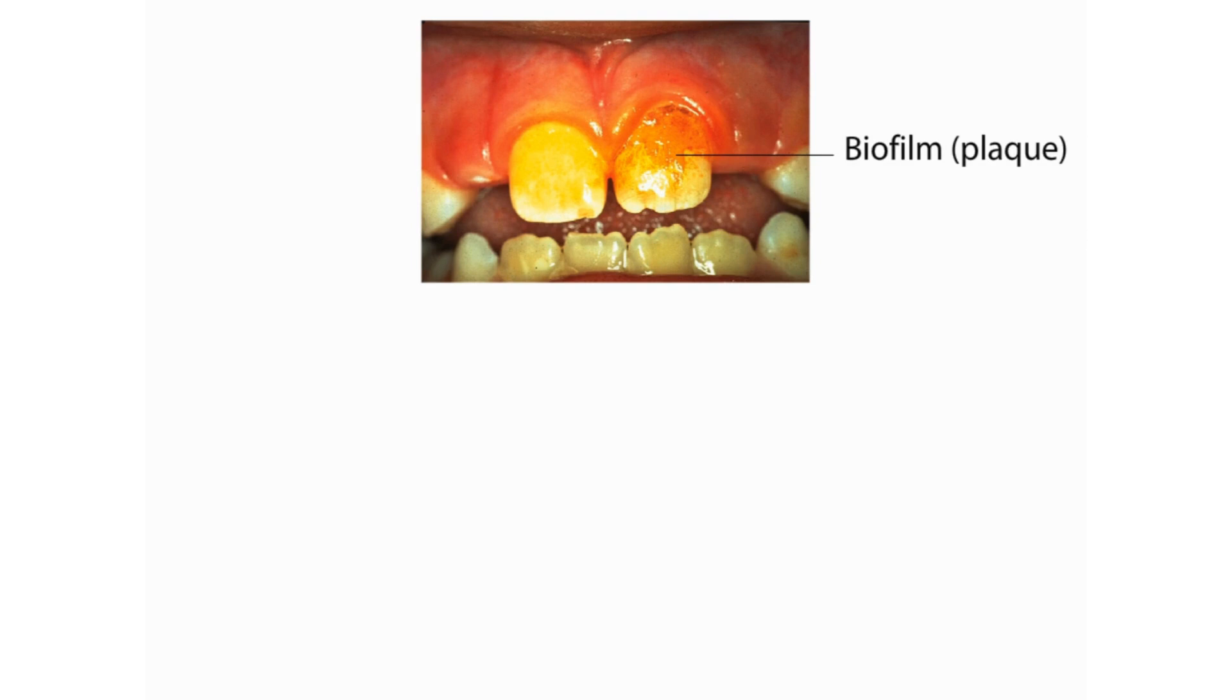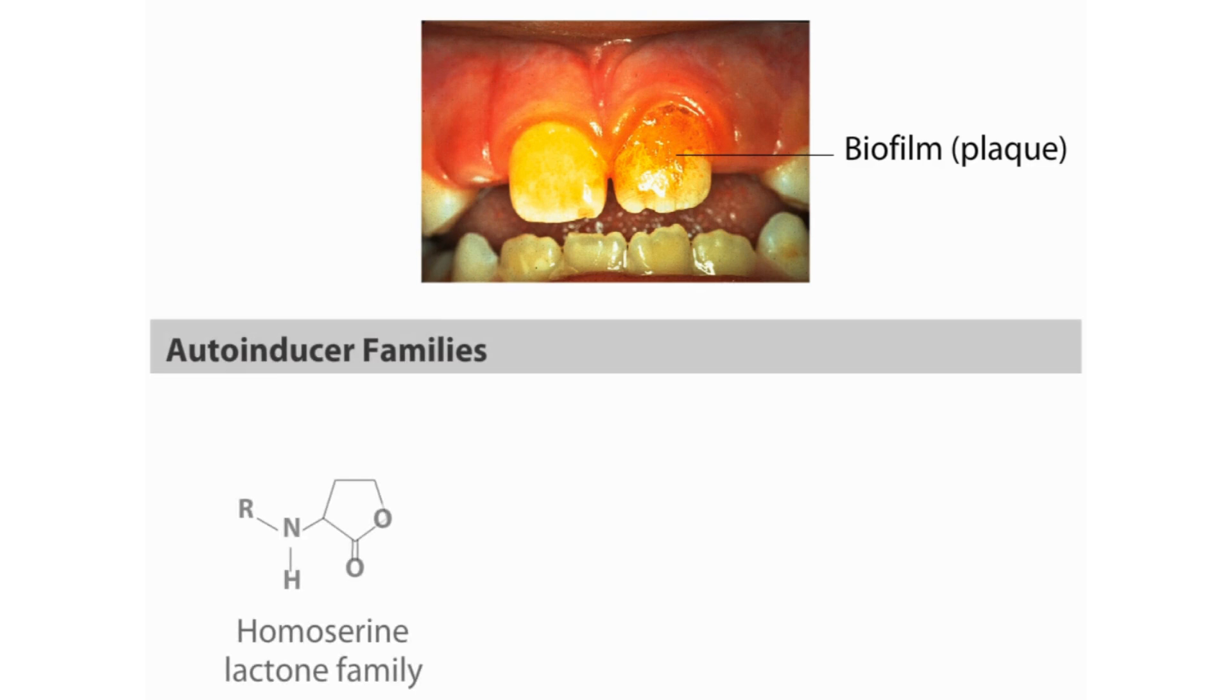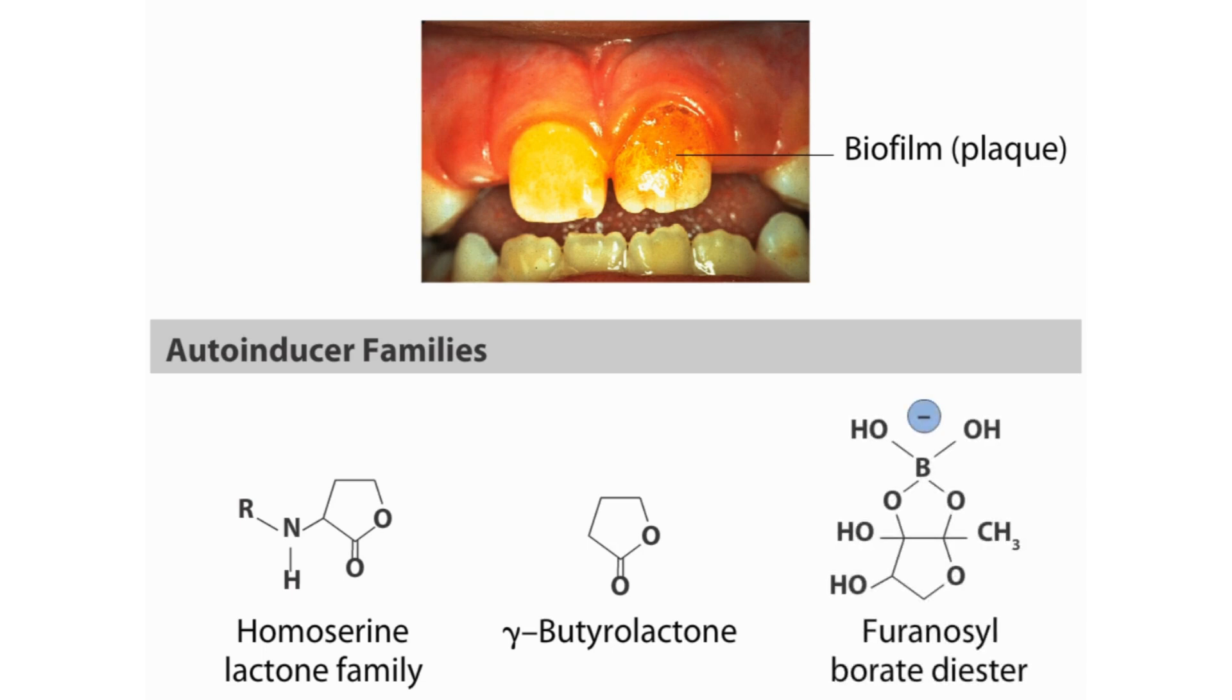In biofilms, bacteria communicate with each other using a variety of chemicals. The bacteria use this chemical language to assess bacterial cell density and diversity and to determine the best time to perform behaviors such as starting to glow or launching a virulent attack within your body.